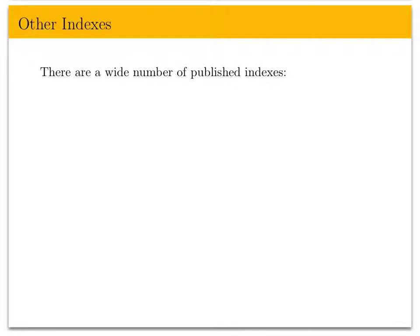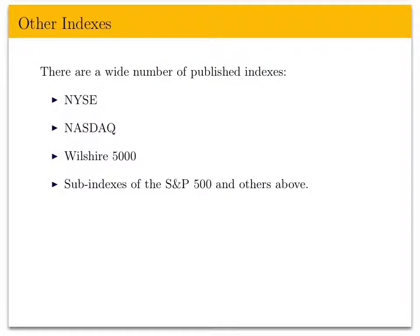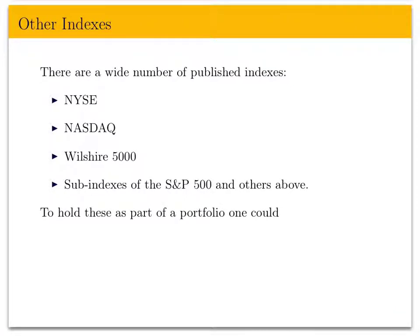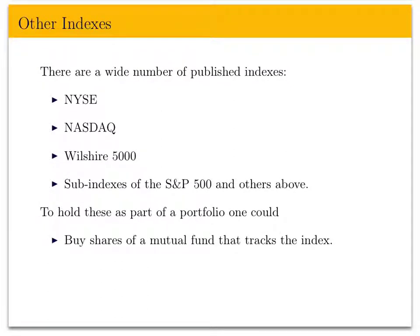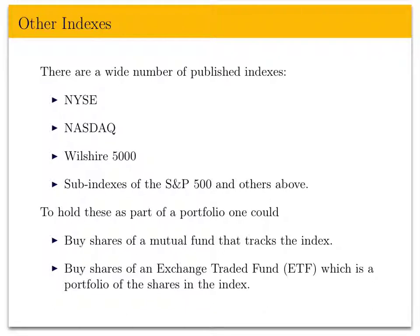Examples of published indexes include the New York Stock Exchange composite, the NASDAQ, the Wilshire 5000, and various sub-indexes of the S&P 500 — including the S&P 100 and other composites. If you wanted to hold one of these indexes in your portfolio, you could buy shares of a mutual fund that tracks the index, or buy shares of an exchange-traded fund, which is a portfolio of the shares of the index. We'll talk more about exchange-traded funds in later lectures.